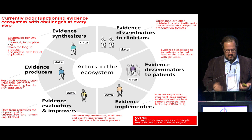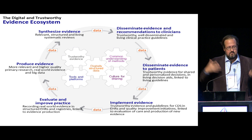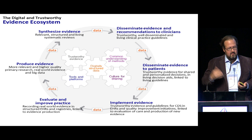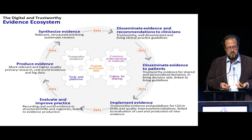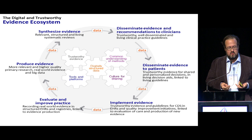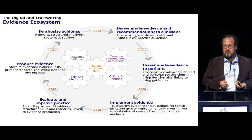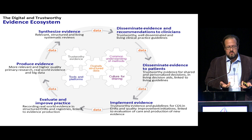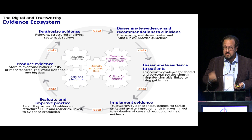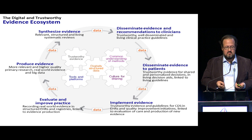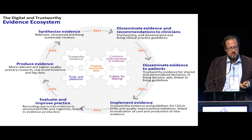Overall, there's no support or easy access to people, methods, and tools in the current ecosystem. Our vision for the solution starts with producing more relevant and higher quality primary research, real-world evidence, and big data that flows as seamlessly as possible into synthesizing evidence — with relevant, structured, and living systematic reviews. These feed dissemination to clinicians through trustworthy, well-disseminated, living clinical practice guidelines, and on to patients through trustworthy evidence supporting shared and personalized decisions, living decision aids linked to living guidelines.